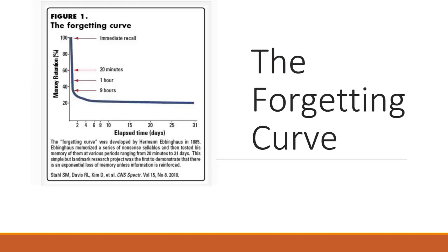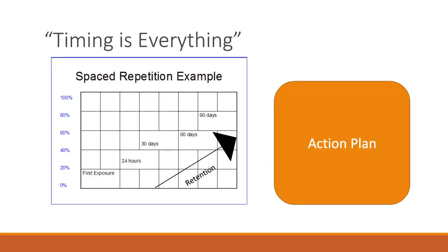It is important that participants understand how information is processed. The forgetting curve provides an example of how information is retained in long-term memory in relationship to the amount of time that elapses between the initial exposure to information and time elapsed. In order to remember information over time, it is important to regularly review the information. This graph illustrates how retention is helped by periodic review.